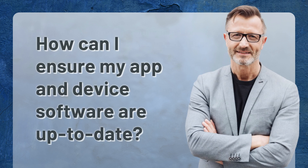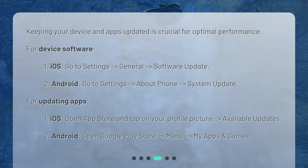How can I ensure my app and device software are up to date? Keeping your device and apps updated is crucial for optimal performance. For device software: 1. iOS, go to Settings > General > Software Update. 2. Android, go to Settings > About Phone > System Update. For updating apps: 1. iOS, open App Store and tap on your profile picture to see available updates. 2. Android, open Google Play Store > Menu > My Apps and Games.